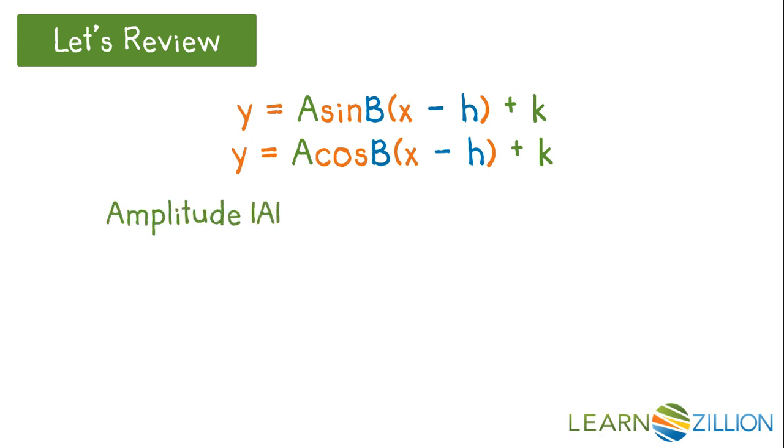The graphs are vertically stretched, shrunk, and are flipped over the x-axis by A. Graphs are shifted up or down by K, up if K is positive, down if K is negative. A and K affect the vertical direction.